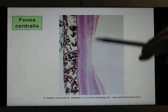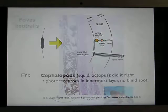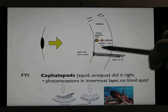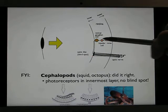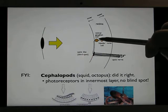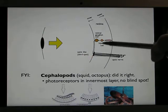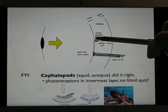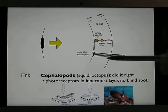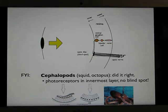This slide shows you the fovea area. In humans, the retina is organized so that light hits the ganglia cell first, then the bipolar cell, then the rods and cones. The axons of the ganglia cells combine together to form the optic disc — it's not a very smart design.